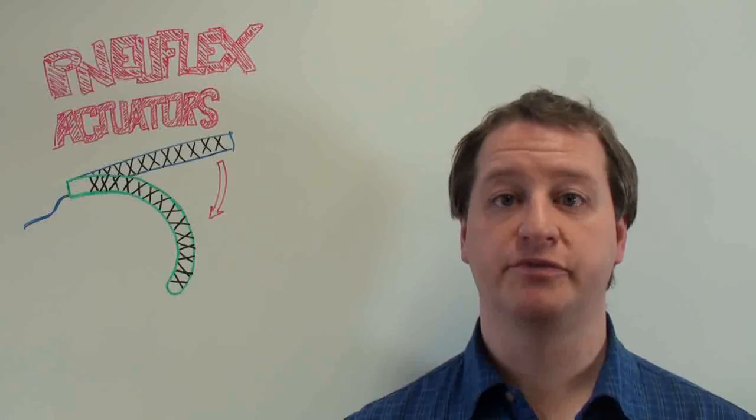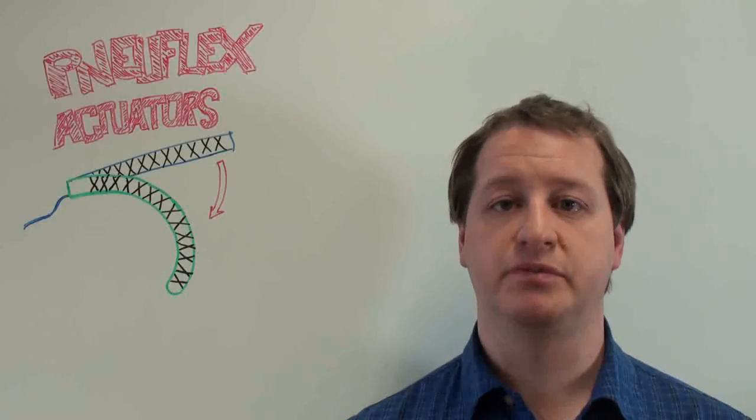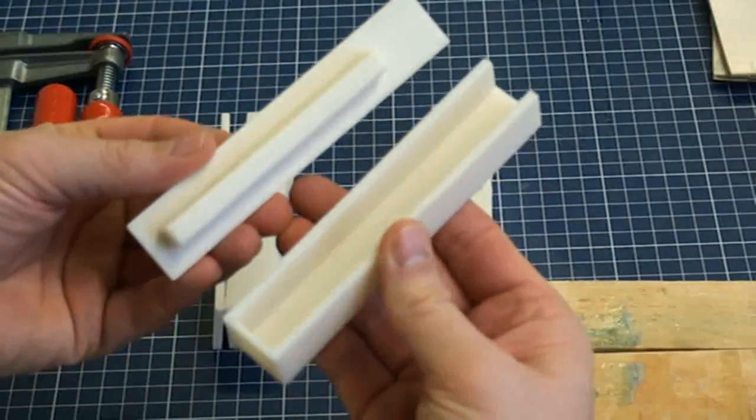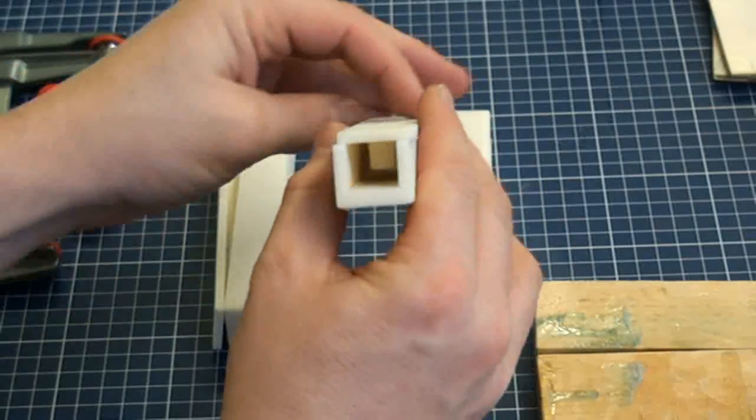To create the main rubber part of a Pneuflex actuator we use a simple mold. It consists of two 3D printed parts and is open on the top.